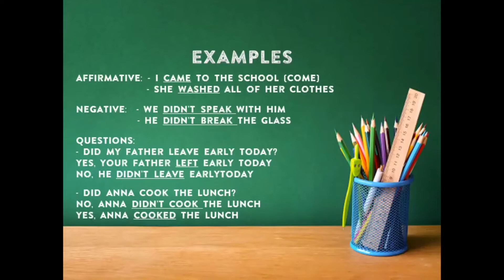Did Anna cook the lunch? No, Anna didn't cook the lunch. Yes, Anna cooked the lunch. Entonces: ¿Anna cocinó el almuerzo? No, Anna no cocinó el almuerzo. Fíjense en la respuesta negativa: didn't cook — el verbo va en presente, igual que en la pregunta. Y en la respuesta positiva va el verbo en pasado para saber que estamos hablando en pasado.